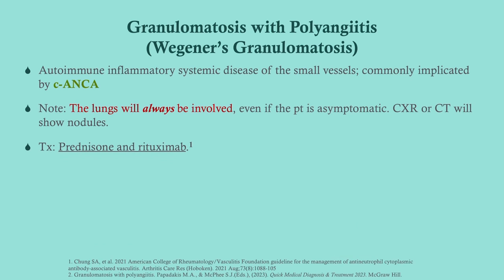Order c-ANCA when you suspect GPA. The lungs will always be involved even if the patient is asymptomatic, so a chest x-ray is helpful even without pulmonary symptoms at presentation. Treatment is prednisone and rituximab.